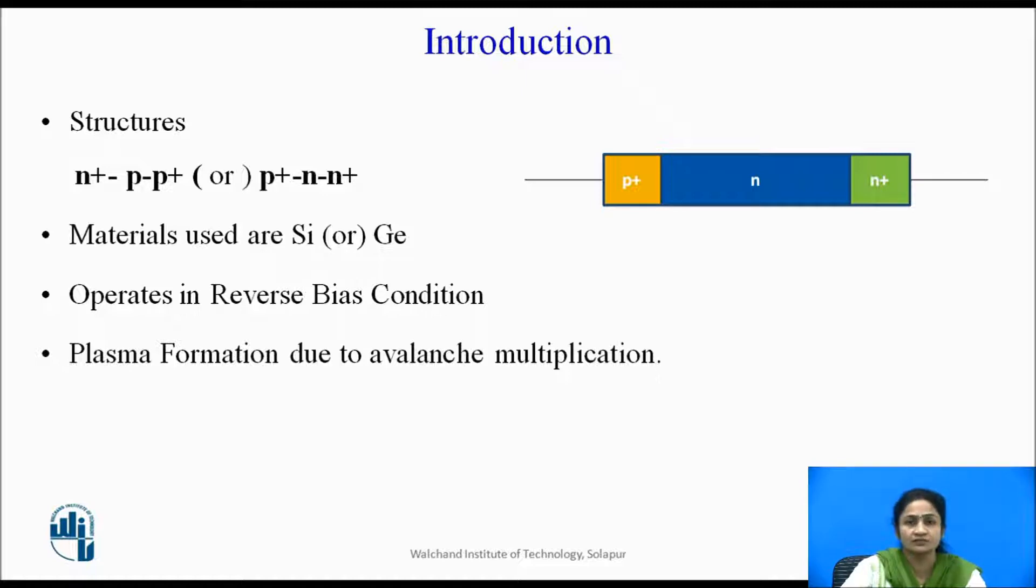Compared to the transit time transfer electronics devices, they have only one junction, whereas this has a PN junction like a PN junction diode. They belong to the family of the IMPATT diode.